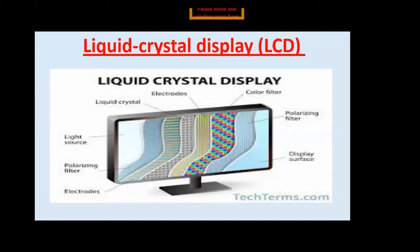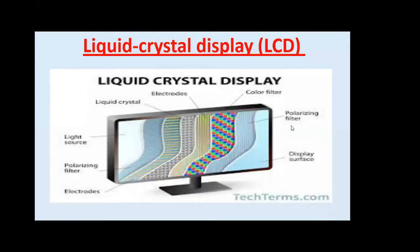The first output device is the liquid crystal display (LCD). LCDs are very common nowadays — you can observe them at your homes and in computer labs. Looking at this picture carefully, the labeled parts include: electrodes, color filters, polarizing filters, display face, and a light source. These are the components of a liquid crystal display.